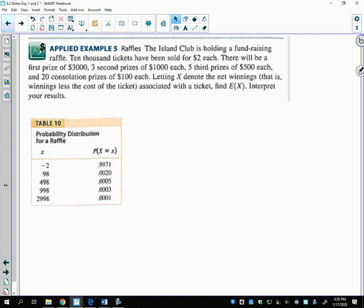Here's another example. The Island Club is holding a fundraising raffle. 10,000 tickets have been sold for $2 each. There'll be a first prize of $3,000, three second prizes for $1,000 each, five third prizes for $500 each, and 20 consolation prizes of $100 each. Let X denote the net winnings—winnings less the cost of the tickets, so that's your profit. Think about where they got these numbers. They're selling 10,000 tickets for $2 each. One plus three plus five plus twenty—29 people are winning out of 10,000, and the rest of the people are not winning.